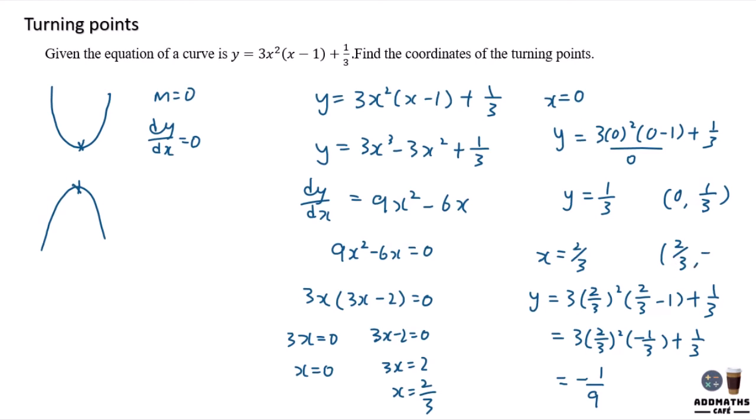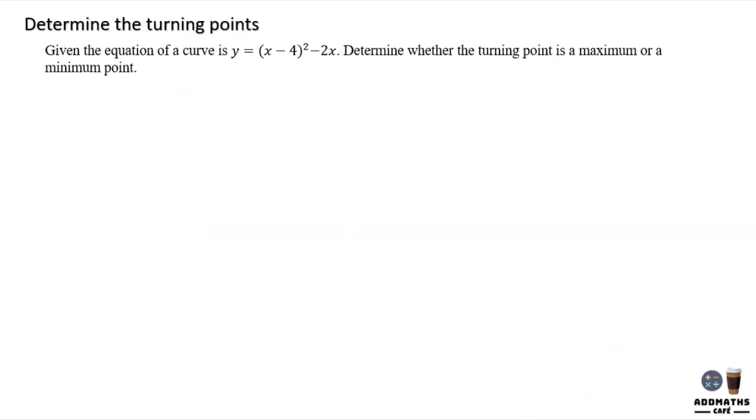So the other point will be (2/3, -1/9). So these are the two turning point coordinates.